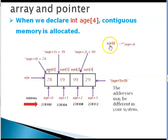Now, when we say age[i] that is same as star age plus i. This star age plus i is the same as star i plus age because a plus b equals b plus a and so this is i[age].